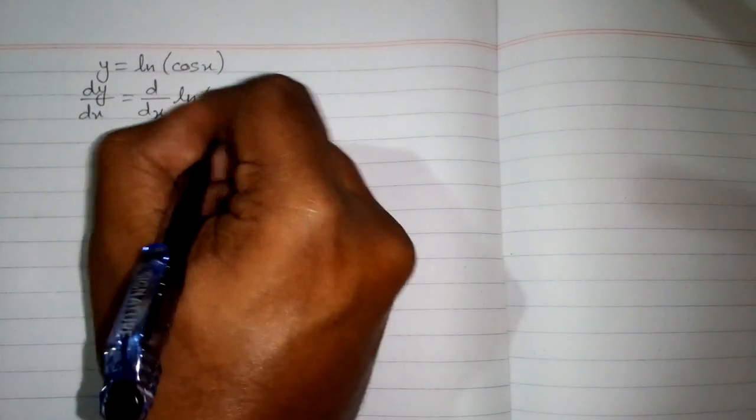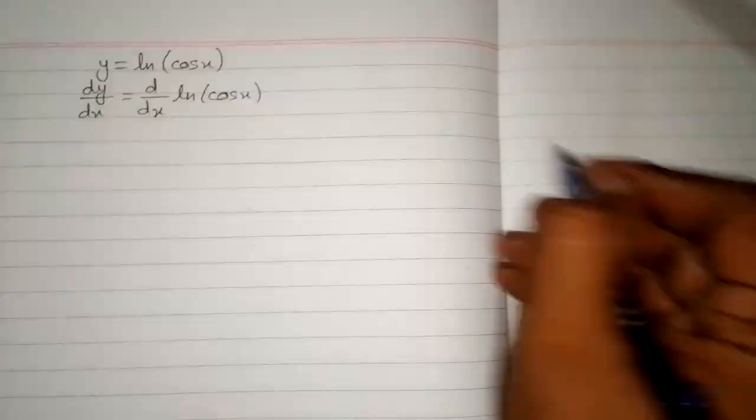So first of all we will differentiate both sides with respect to x, so we have dy by dx is equal to d by dx of ln of cos x.